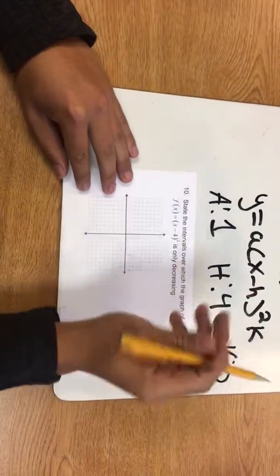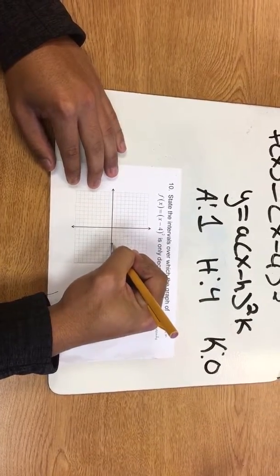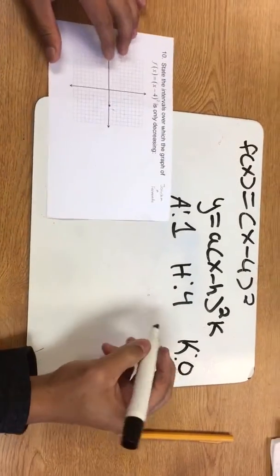We're going to plot it. h is 4 so we're going to count one, two, three, four, and now we're going to label our x and y's.